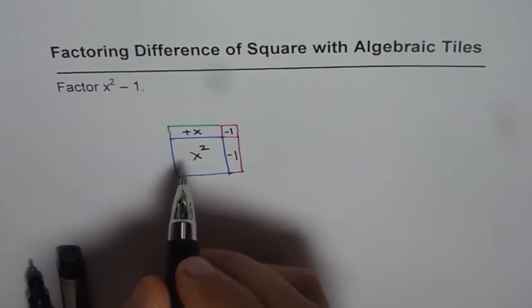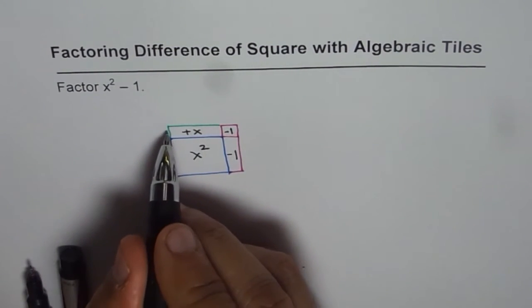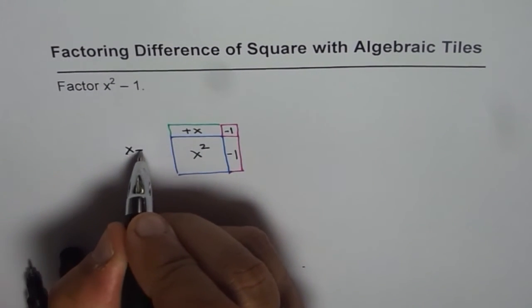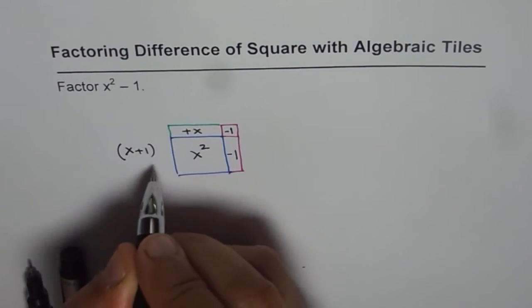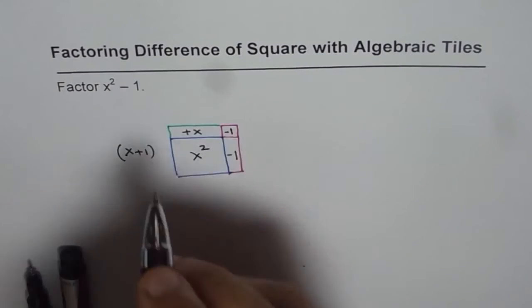now here you see it is x plus 1. Since this is plus. So this is x plus 1 on the width side and on the length side we have x minus 1.